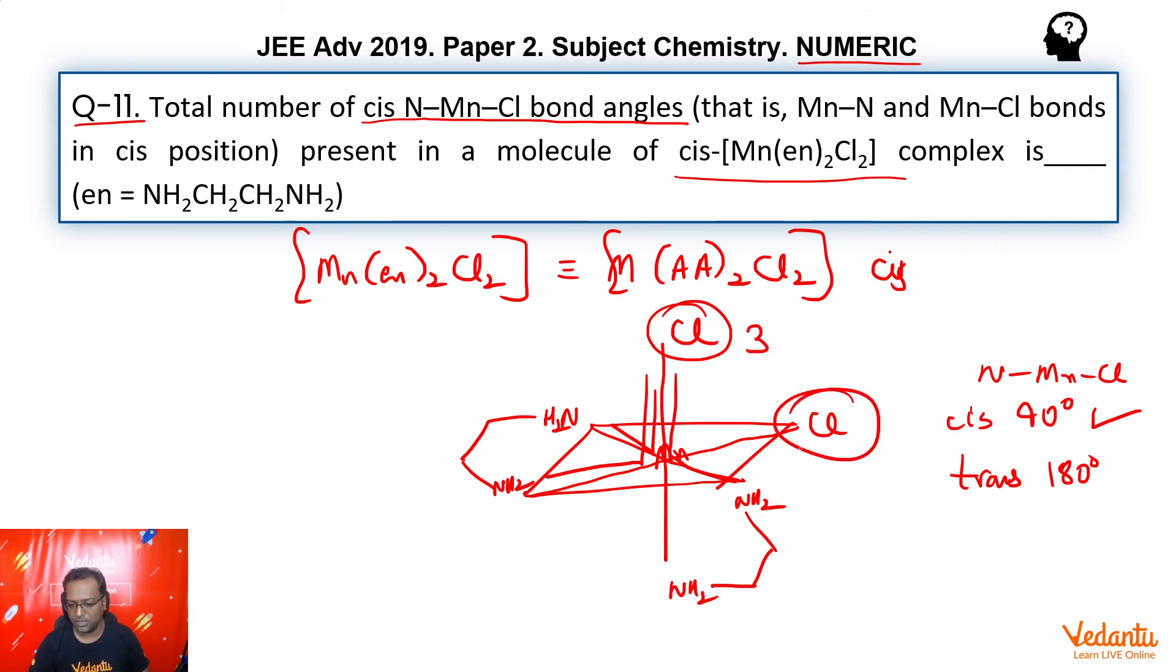Now the other chlorine. The other chlorine makes how many? One here, the other here, and you can see the third one also. So 3 here. So total we have 3 plus 3, that is 6 cis 90 degree bonds.